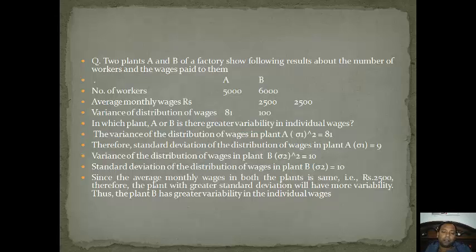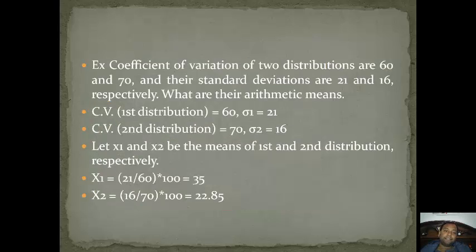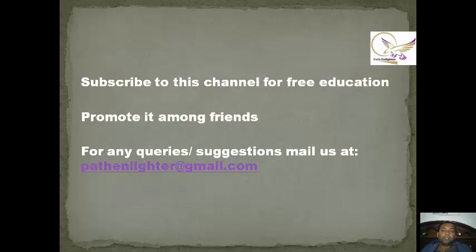Now another example: suppose the coefficients of variation of two distributions are 60 and 70, and their standard deviations are 21 and 16. Using the formula coefficient of variation = (standard deviation / mean) × 100, we substitute to find: mean x1 = 35 and mean x2 = 22.85.